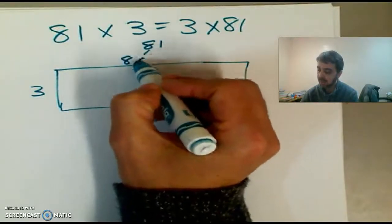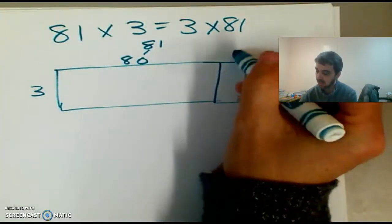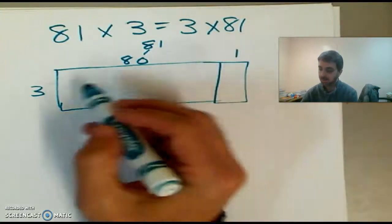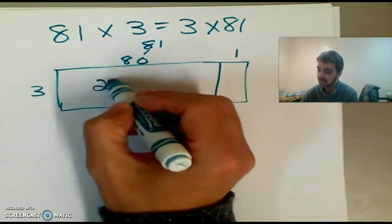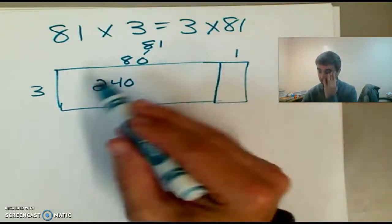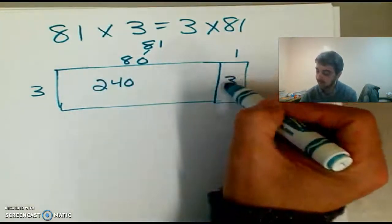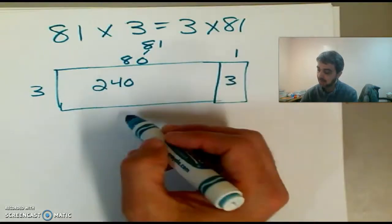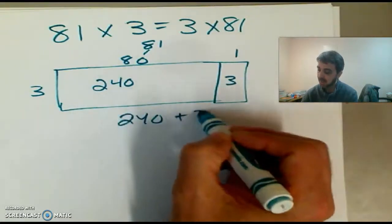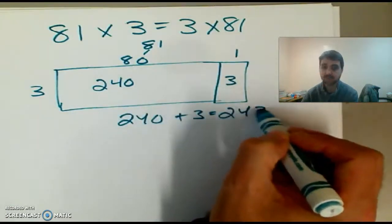And we've got 3 rows of 81. So we're going to break that up into 80 and 1. Okay, so 3 times 80 is 240, right? And 3 times 1 is 3. And 240 plus 3, we can do that in our heads, is 243.